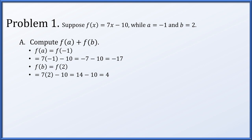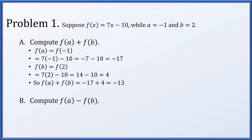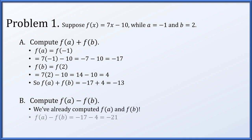So we've computed that f of a is equal to negative 17 and f of b is equal to 4. Therefore, f of a plus f of b is simply negative 17 plus 4, which is equal to negative 13. Second, we're asked to compute f of a minus f of b, but we've already computed f of a equals negative 17 and f of b equals 4. So f of a minus f of b is simply negative 17 minus 4, which is equal to negative 21.